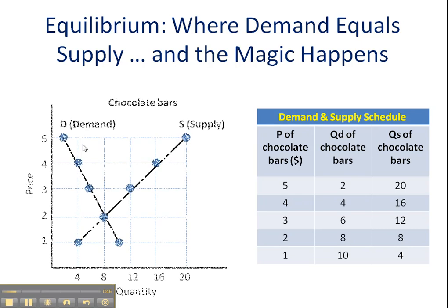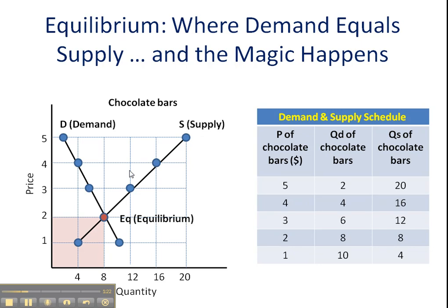Based on that supply and demand schedule, I can create this particular graph. One thing we want to note is this area that I've bolded here — this equilibrium area where the demand curve and the supply curve meet. That is where supply and demand equal one another. At a price of $2 per chocolate bar, 8 will be sold in the market in this particular week. That is market equilibrium, also referred to as the market clearing price.